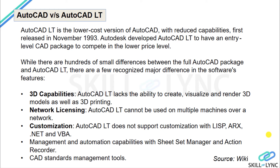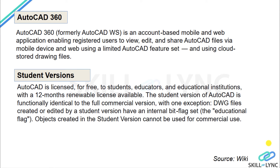For students and civil engineers wondering which software to use: if you are a student at a recognized university or accredited institution, Autodesk offers free student versions for one year with a 12-month renewable license. Not only AutoCAD, but many other software packages such as Revit, Inventor, and Fusion 360 are available free if you are a student, educator, or associated with an educational institution worldwide.